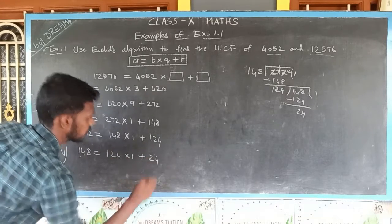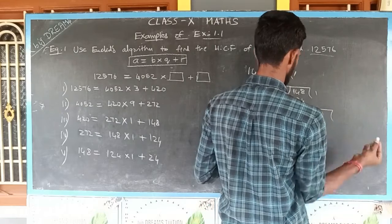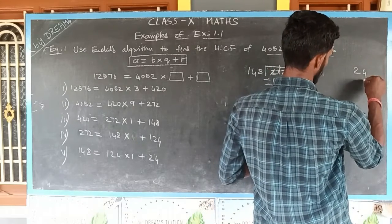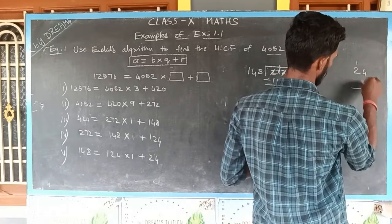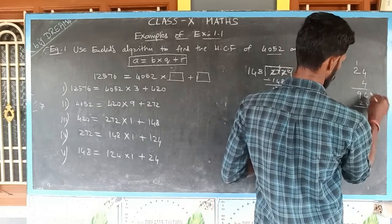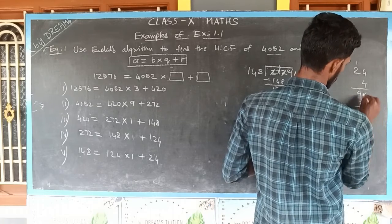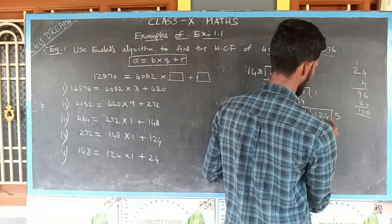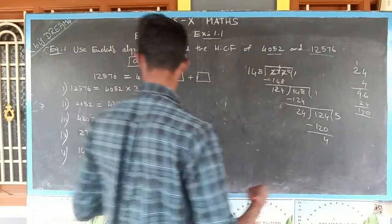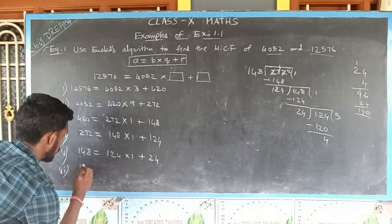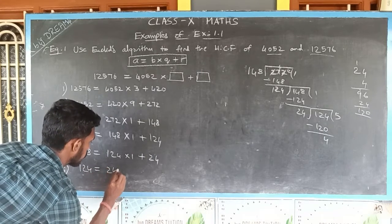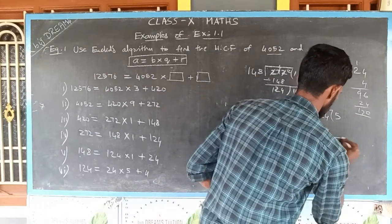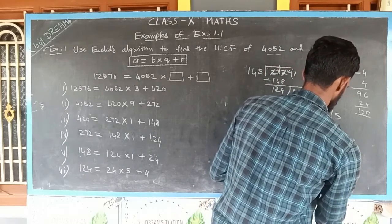Now 24 becomes the divisor and 124 becomes the dividend. 24 × 4 = 96, and 24 × 5 = 120. The quotient is 5 and the remainder is 4. So 124 = 24 × 5 + 4. Then 4 becomes the new divisor and 24 becomes the dividend.